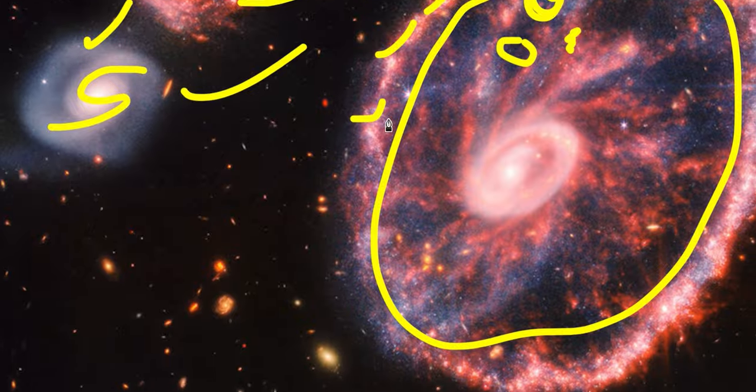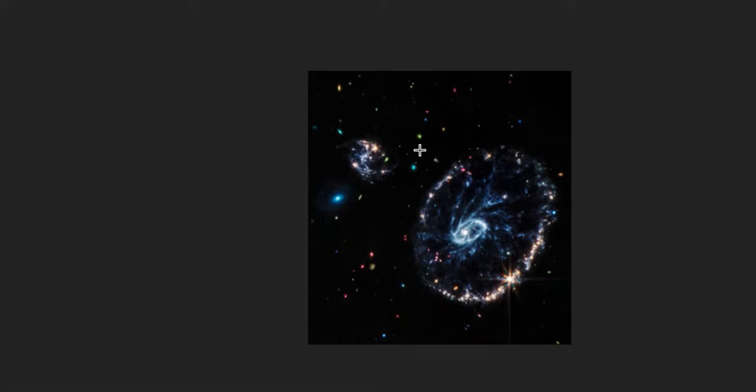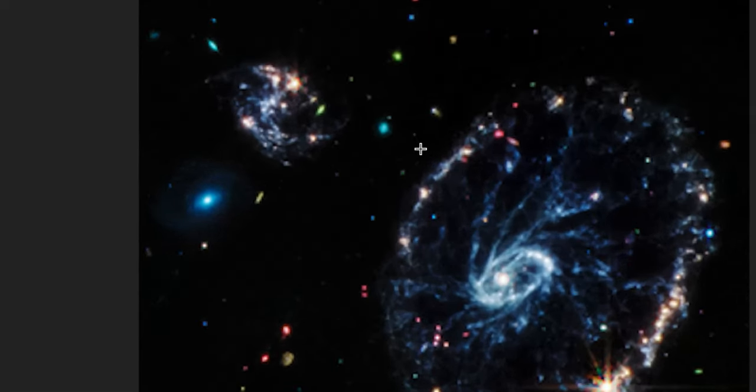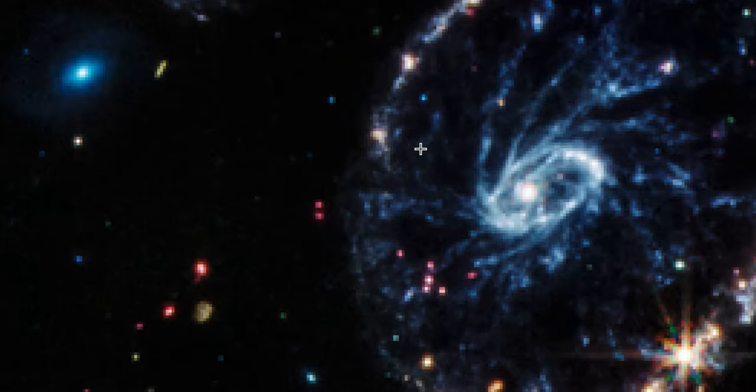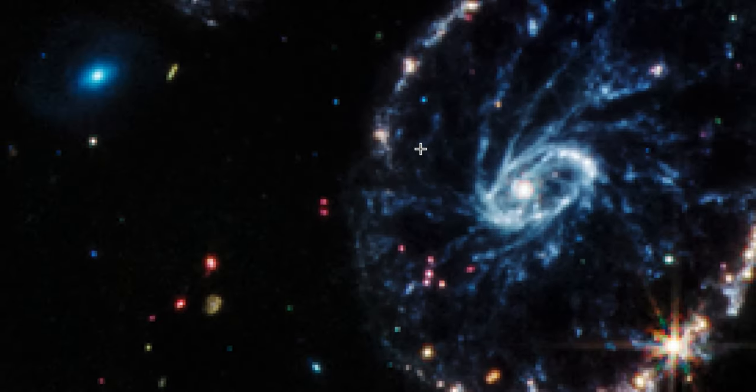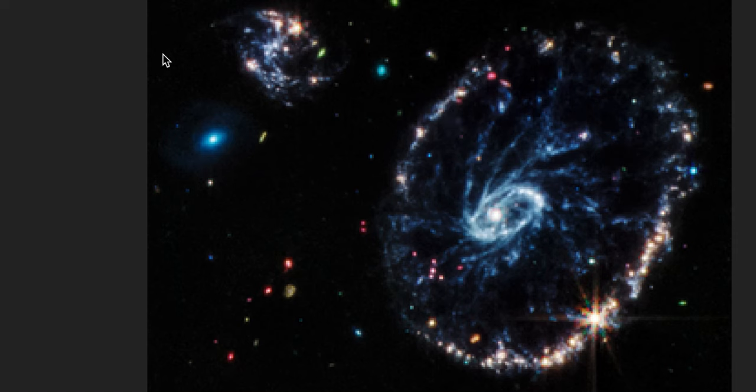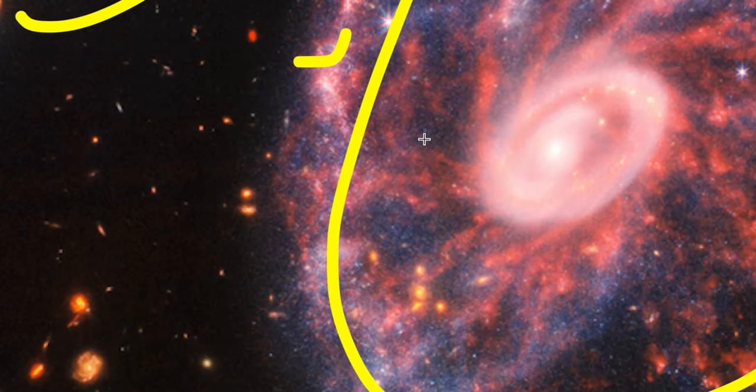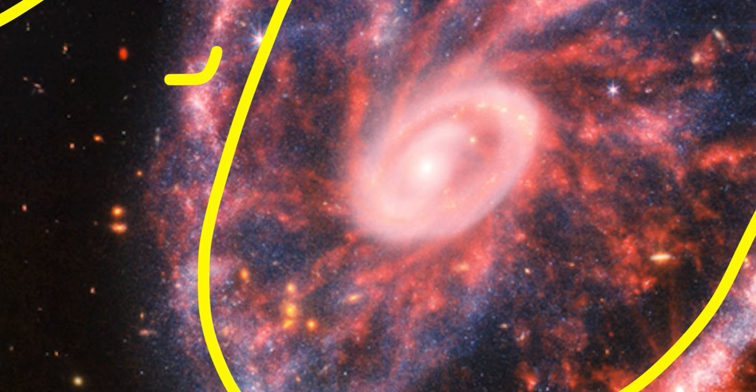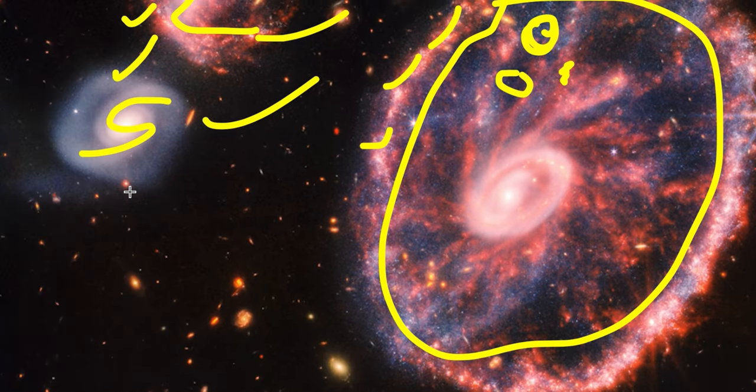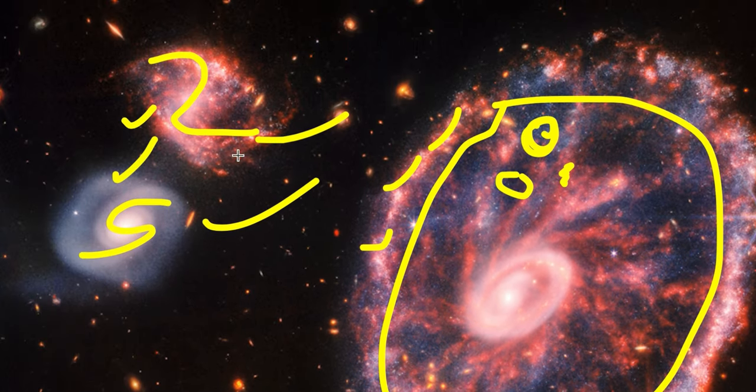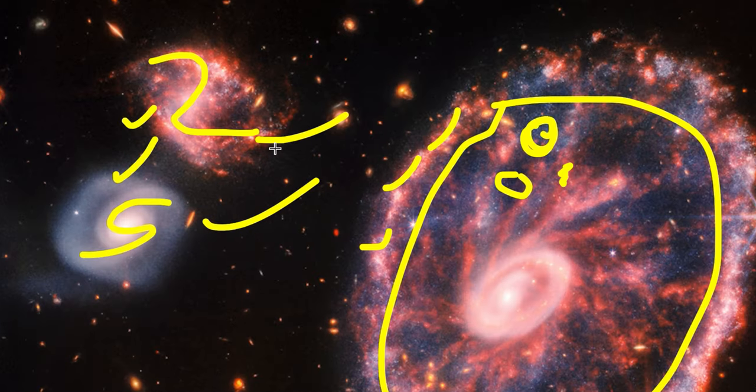Learning finer details about the dust that inhabits the galaxy requires Webb's mid-infrared instrument, MIRI. MIRI data are colored red in this composite image and reveal regions within the Cartwheel galaxy rich in hydrocarbons and other chemical compounds, as well as silicate dust like much of the dust on Earth.